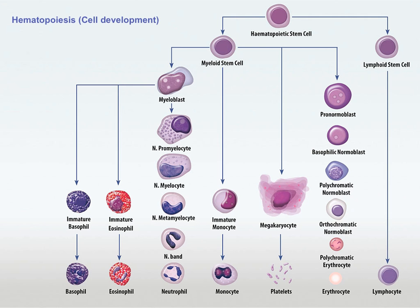There's the myeloid line and the lymphoid line. We start with our pluripotent stem cell — using the class analogy, like a hunk of metal — and differentiate down to what we ultimately turn into. If you want a Buick, a Volkswagen, a Ferrari, and a Lexus at the bottom, you have to go through all the steps to get the end result. The myeloid stem cells have a whole differentiation line, while lymphoid stem cells just turn into lymphocytes.